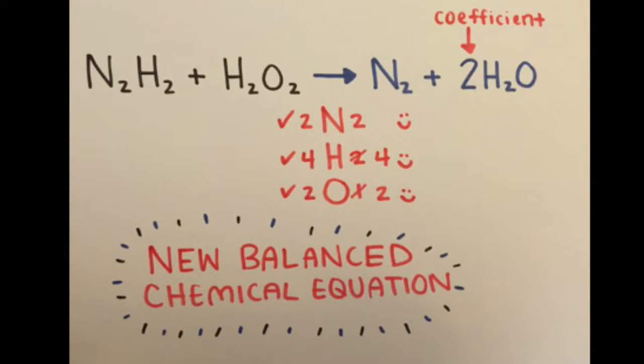We must add a coefficient to the chemicals on the right side since they are the smaller amount. Adding the two in front of H2O will now give me four hydrogen and two oxygen on the right side of the equation. The new balanced chemical equation is N2H2 plus H2O2 yields to produce N2 plus 2H2O. The first step is complete.